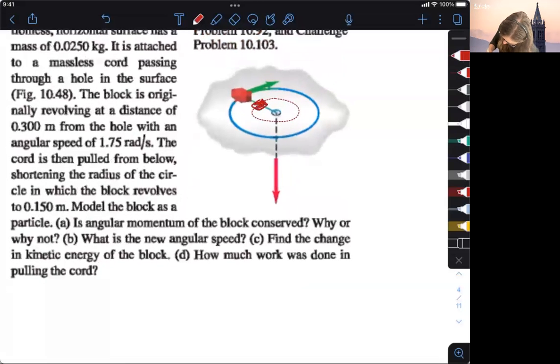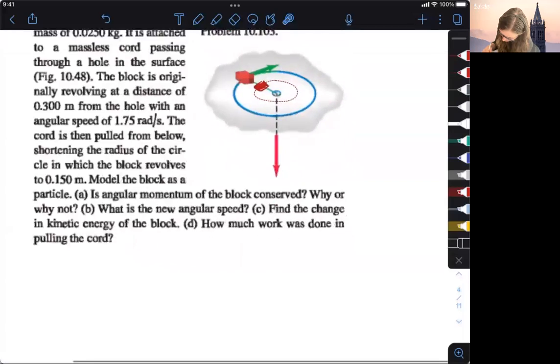So as we're pulling this string down, we're going to go from this larger radius, we're going to do some work to pull it down, and then we're going to go to a smaller radius. So we're going to change the kinetic energy by pulling it in.